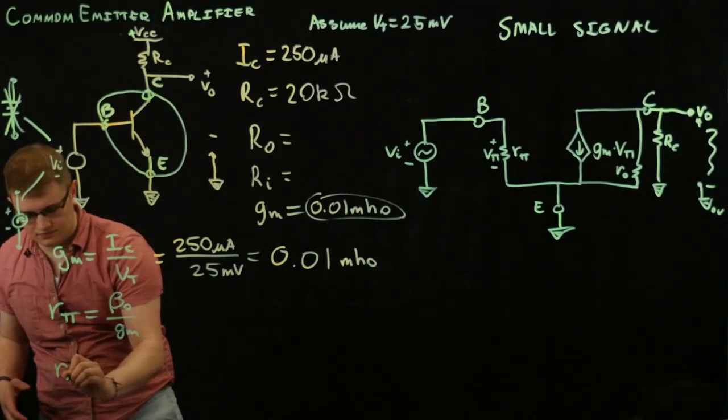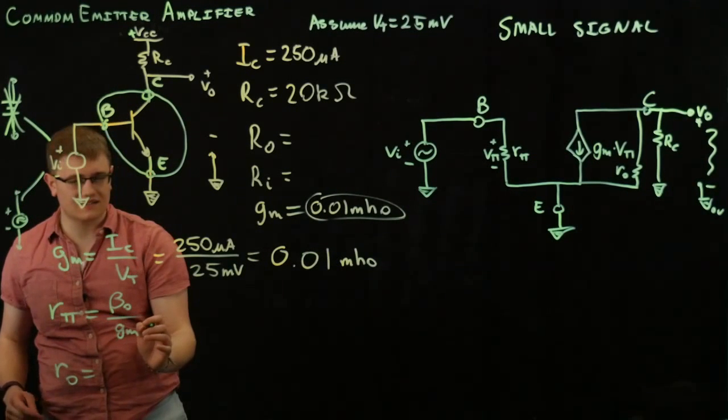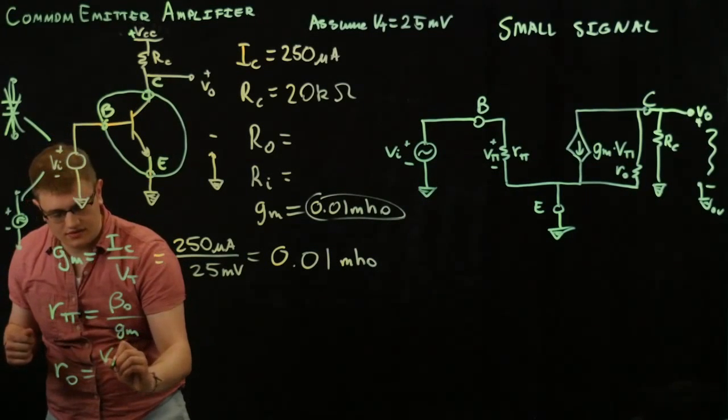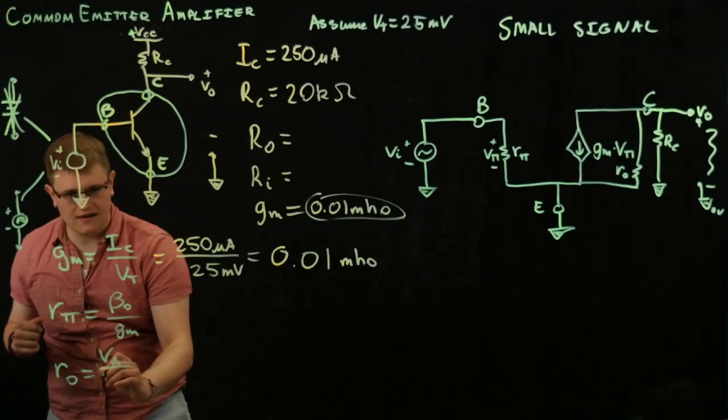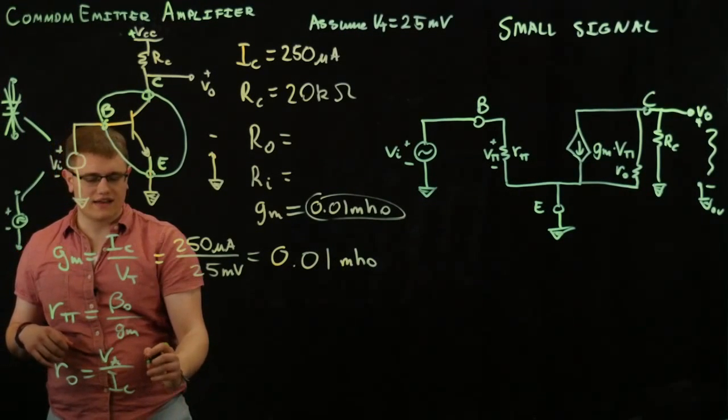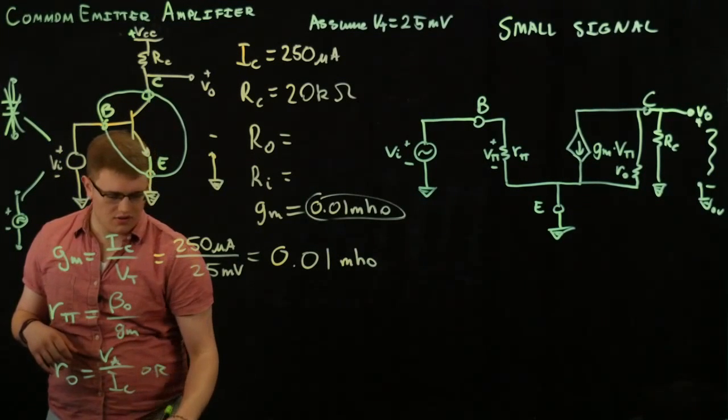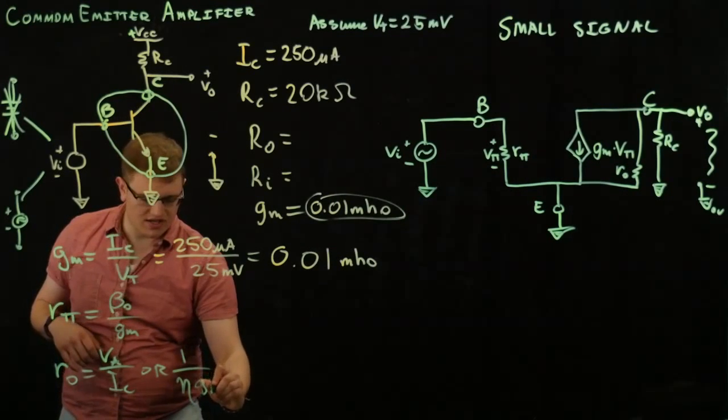which is going to be equal to beta over GM. And then, we have RO, which is going to be equal to, what is it? It's VA, early voltage, over IC, collector current. And then, that's also equal to 1 over eta times GM.